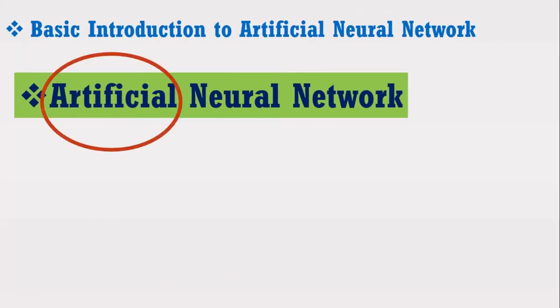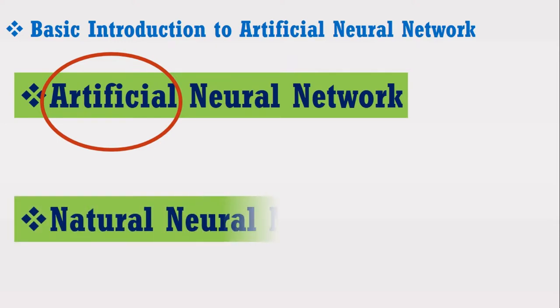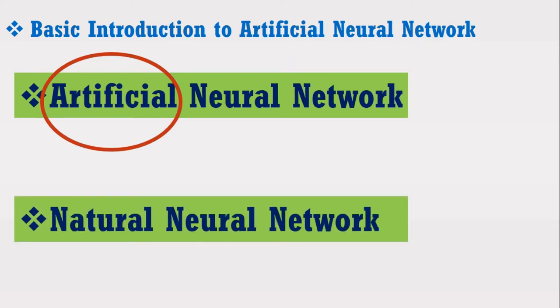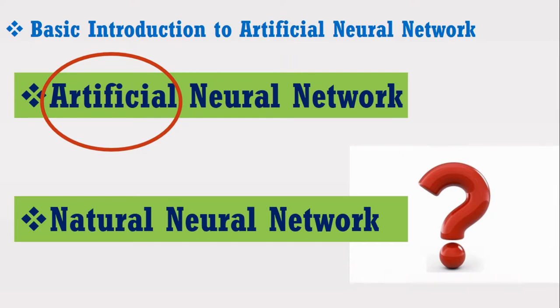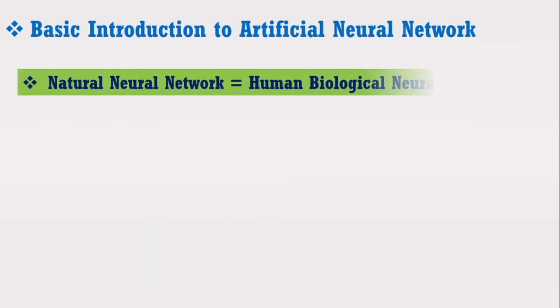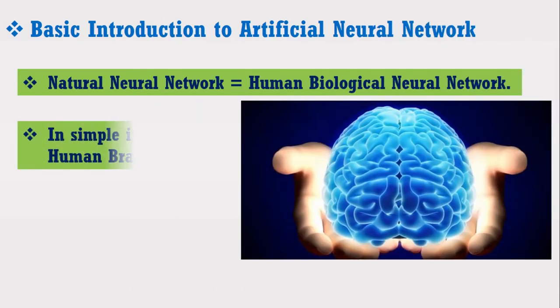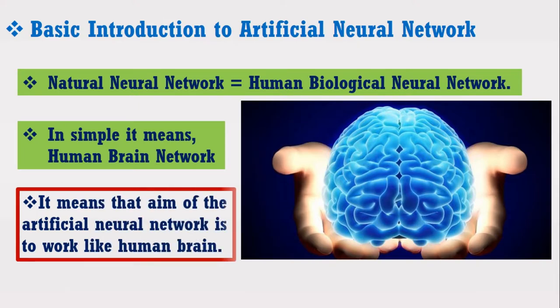Just look at the word artificial neural network. The word 'artificial' itself points out that it is not the natural or original neural network. The original neural network means the human biological neural network — in simple words, our human brain. This means that the aim of the artificial neural network is to work like the human brain.